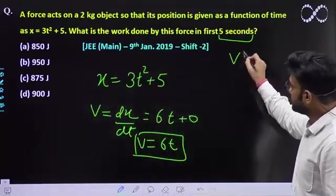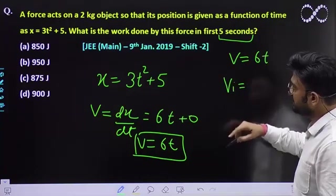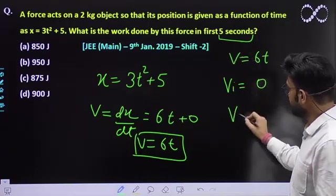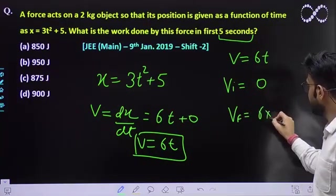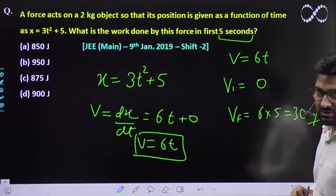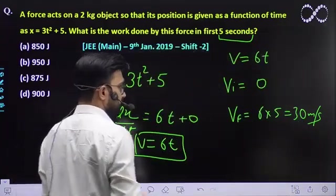So this means the velocity and time relation is given. Initial velocity when t equals 0 seconds will be 0. At t equals 5 seconds, the final velocity will be 30 m/s.